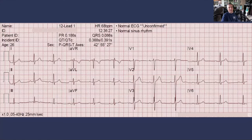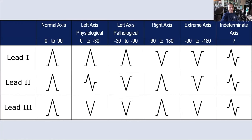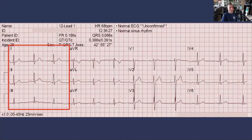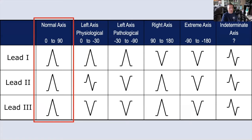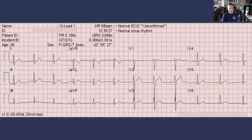There's also a third way — a speed method using leads I, II, and III. In this particular case, lead I is positive, lead II has a positive QRS, and lead III has a positive QRS. Using this method, we would know we're somewhere between zero and 90 degrees. So three different methods all prove that we have a normal axis on this particular ECG.